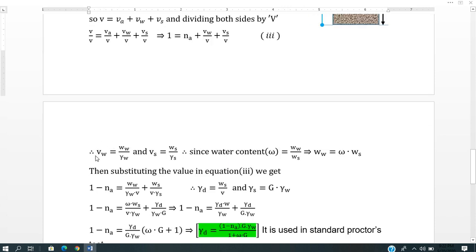Volume of water equals weight of water divided by specific weight of water. Similarly, volume of solid equals weight of solid divided by specific weight of solid. Since water content w equals weight of water by weight of solid, weight of water equals w times weight of solid.